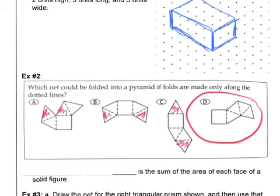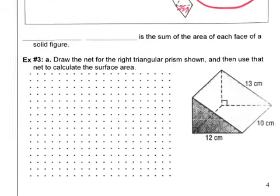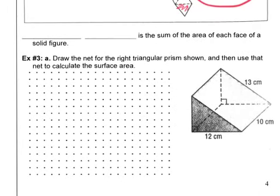Okay. Let's go on to the last example here. Before we do that, just a little definition. Surface area is the sum of the area of each face of a solid figure.